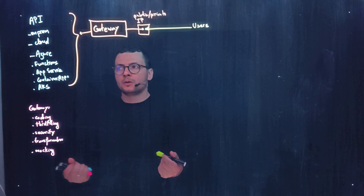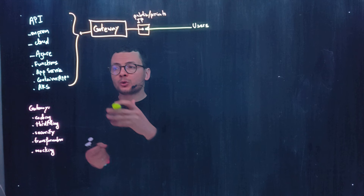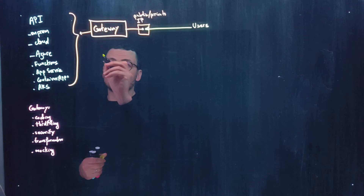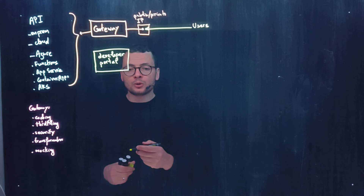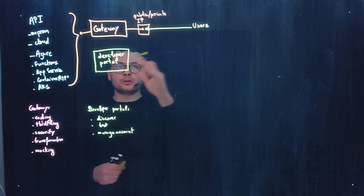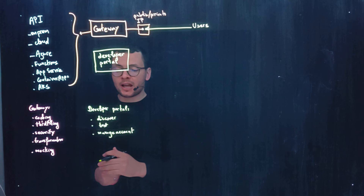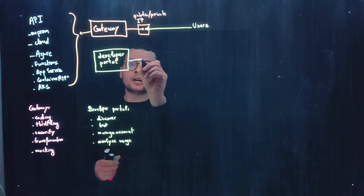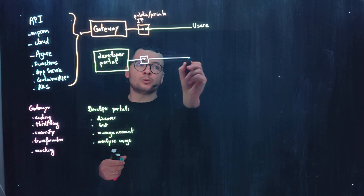You expose your APIs to users through the gateway, but maybe you also want to offer these APIs to external or third-party developers so that they could integrate them within their own applications. In this case, you can provide a developer portal. The developer portal will be used to discover the APIs or web services, test those web services, and manage accounts. If you want to offer your APIs to third-party developers, you want to control how they use and access your APIs — so maybe you'll give them API tokens and analyze usage. The developer portal can be exposed through either a public or a private endpoint.